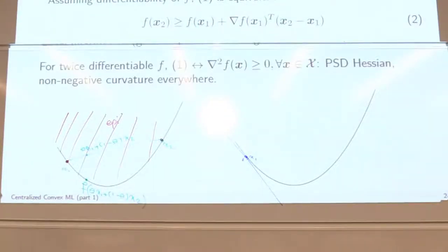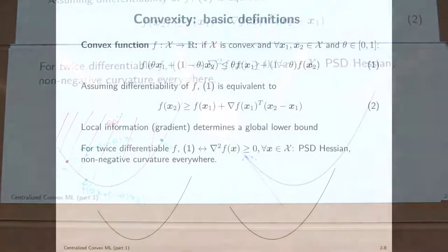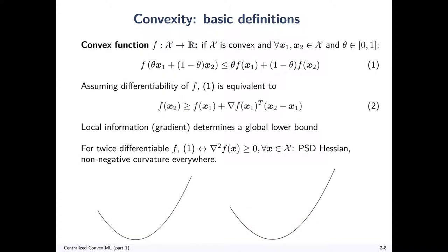And if the function is twice differentiable, we can say something more. In that case, we can say the Hessian exists and is positive semi-definite. This says that the curvature of the function is always non-negative in all x. So these are three main definitions of convex functions depending on differentiability: the basic definition, first-order, and second-order. Any questions so far?